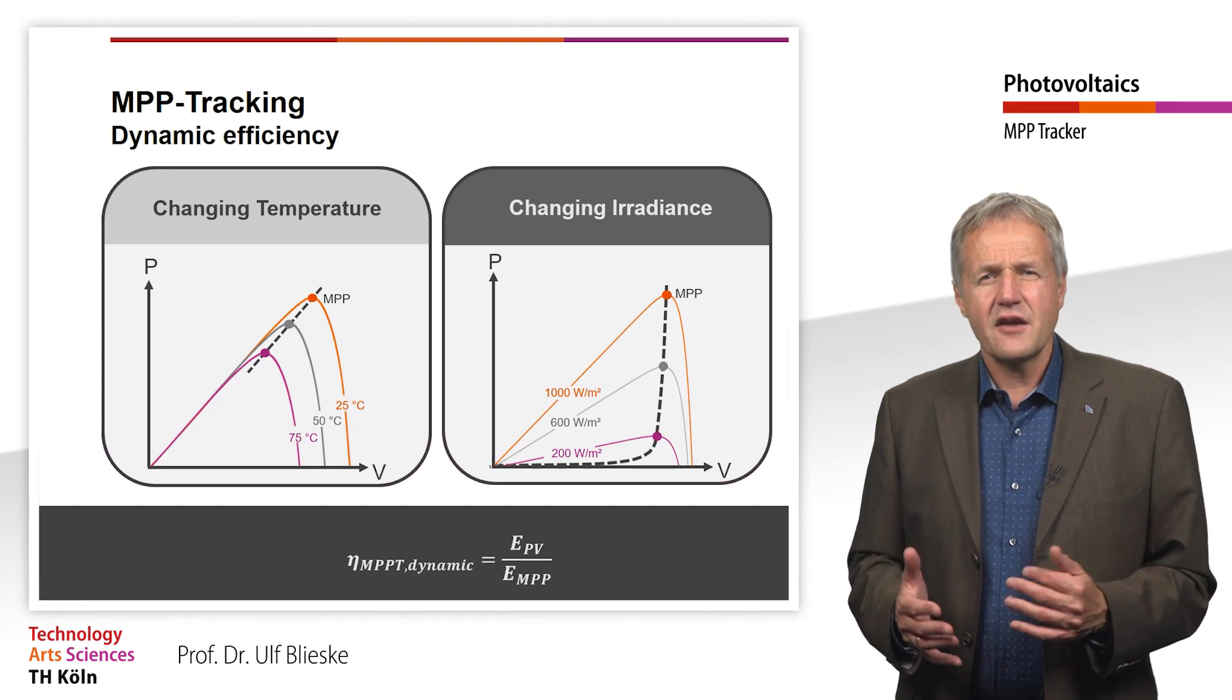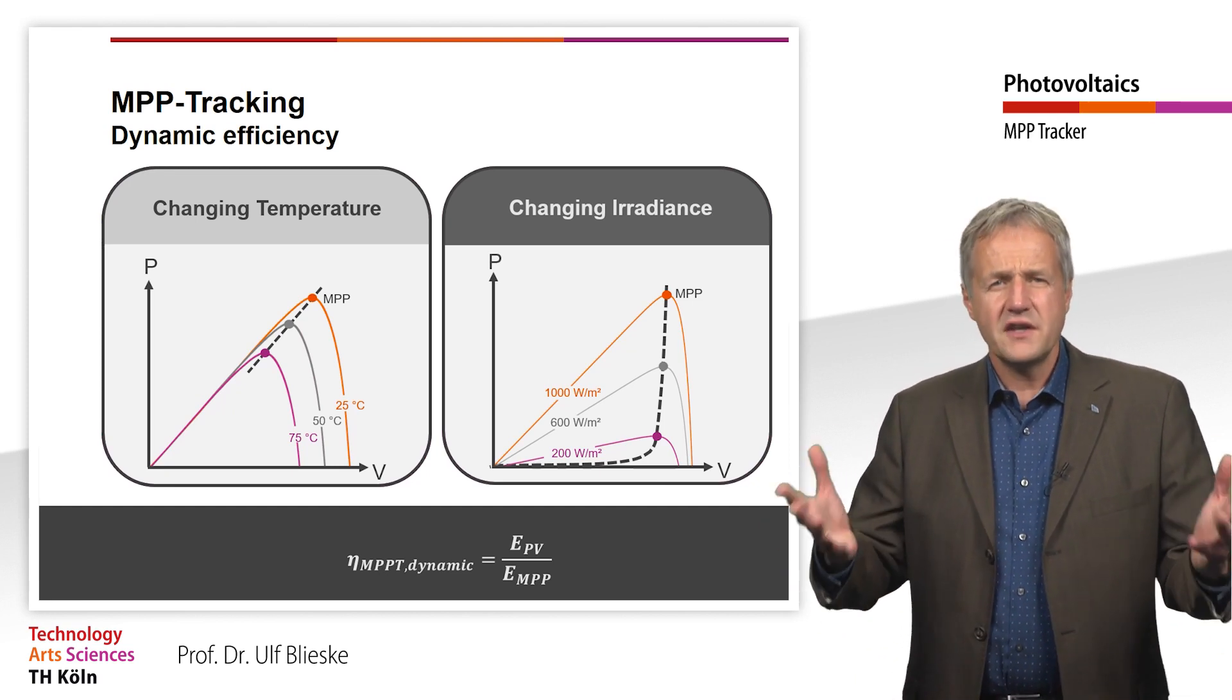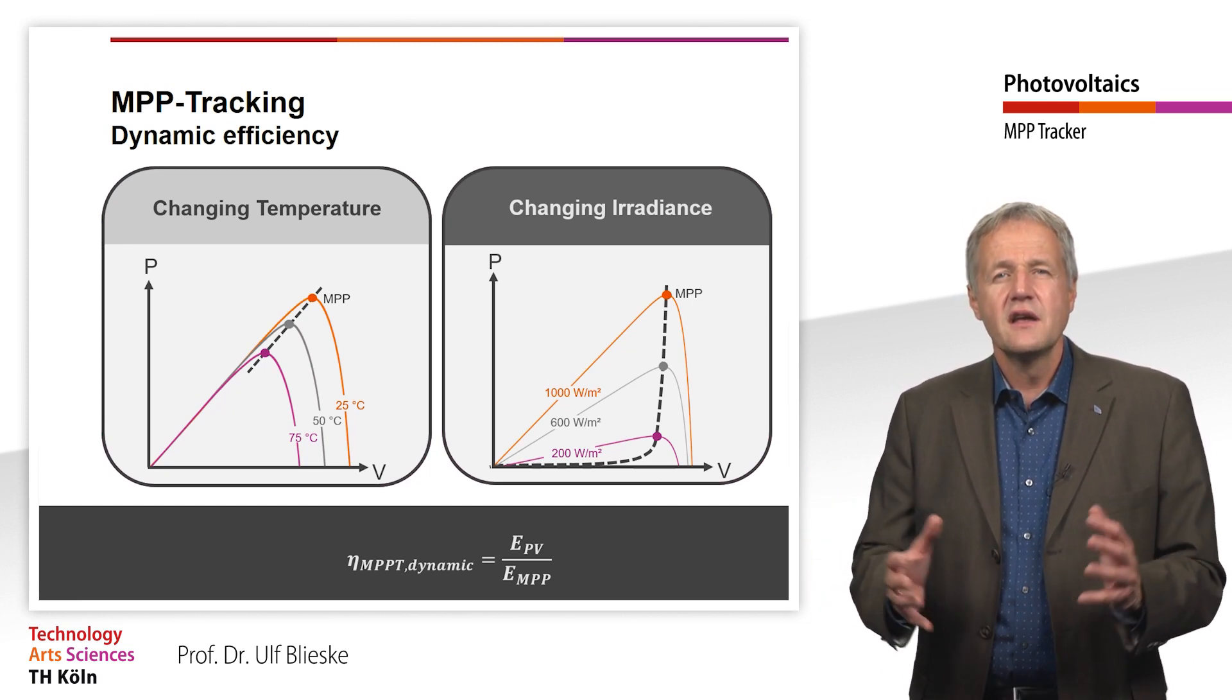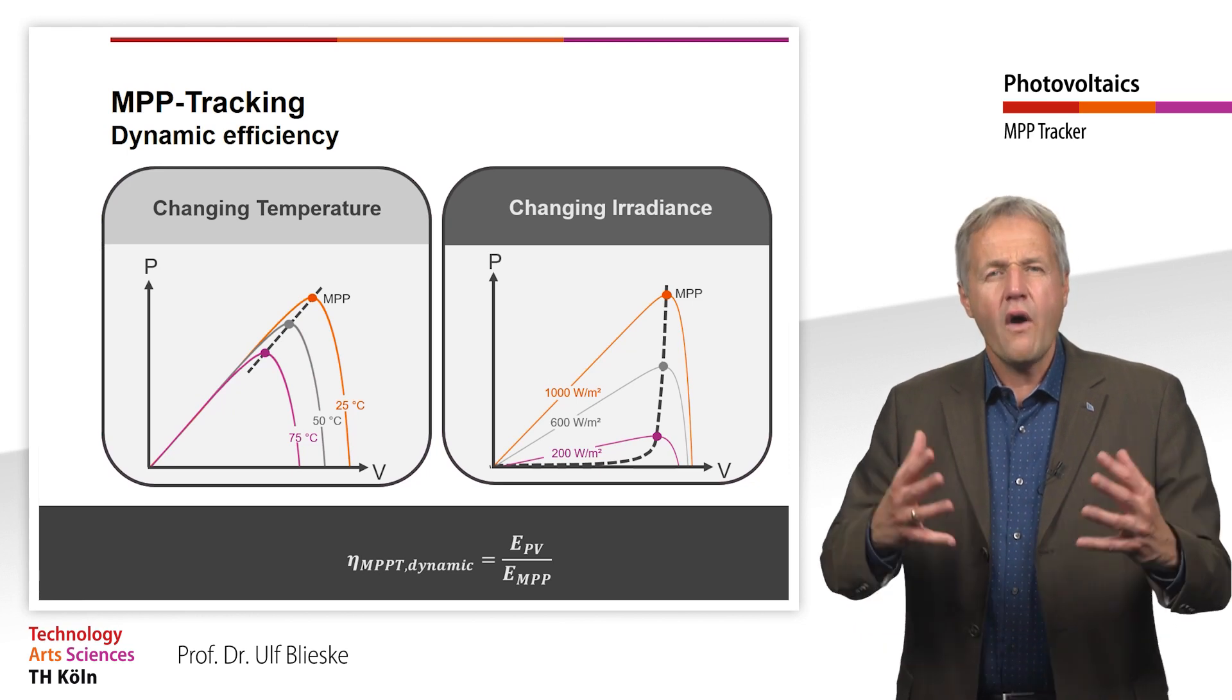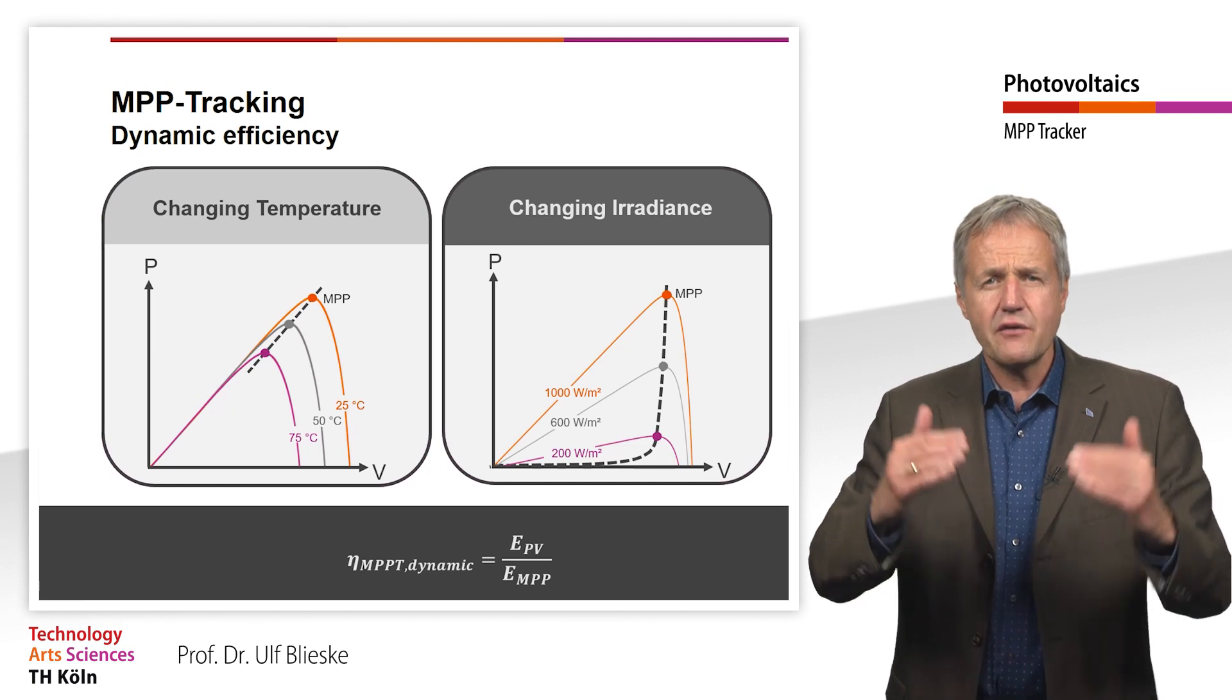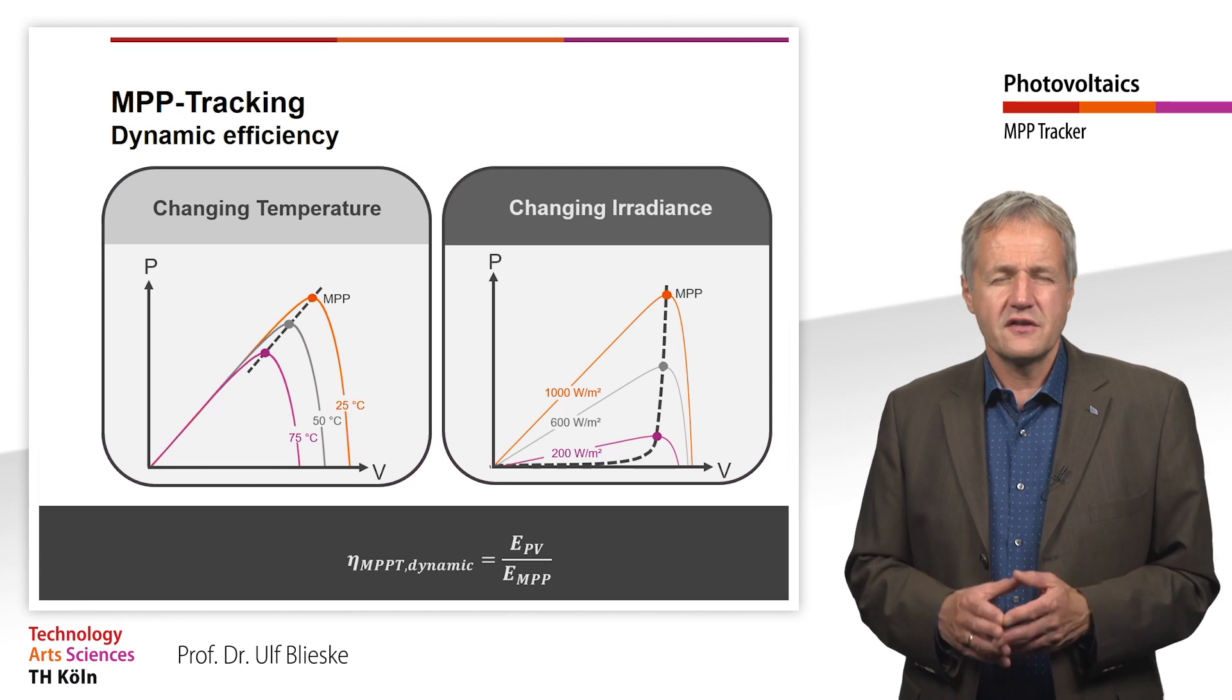Just like the static efficiency, dynamic efficiency describes the ratio of the energy actually provided by the PV generator to the theoretical possible energy in the MPP. However, the dynamic efficiency is determined under rapidly changing irradiation, while with the static efficiency irradiation is kept constant.